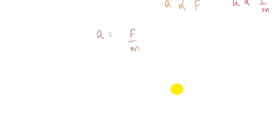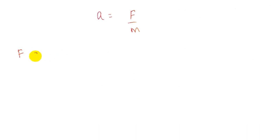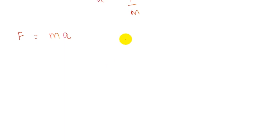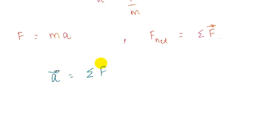Combining these results, acceleration equals force over mass, or rearranged: force equals mass times acceleration. This is the equation given by Newton's second law. In general, several forces may act on an object, so we write F_net as Sigma F, and Newton's second law becomes: acceleration equals Sigma F divided by mass, or Sigma F equals mass times acceleration.